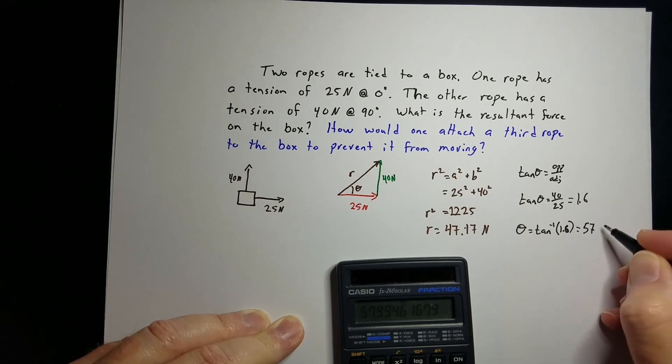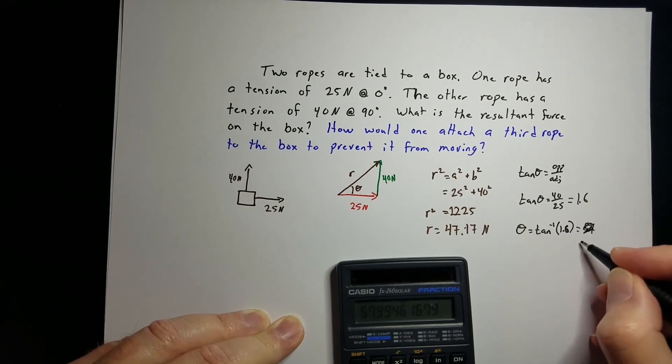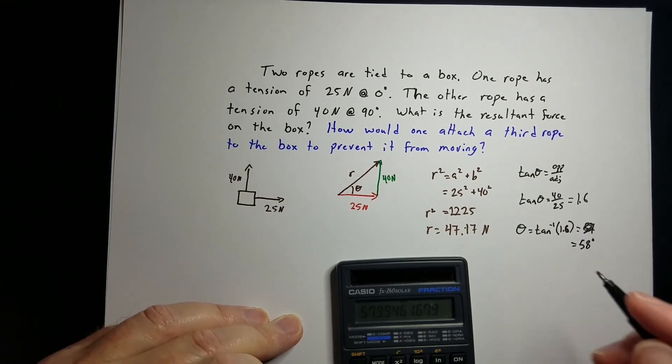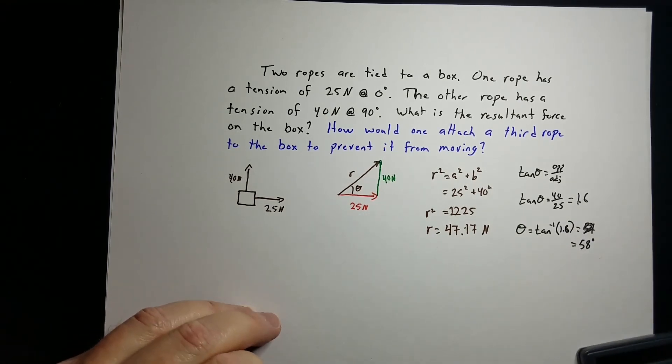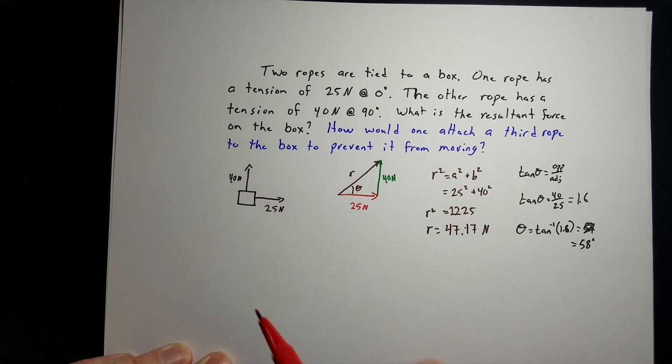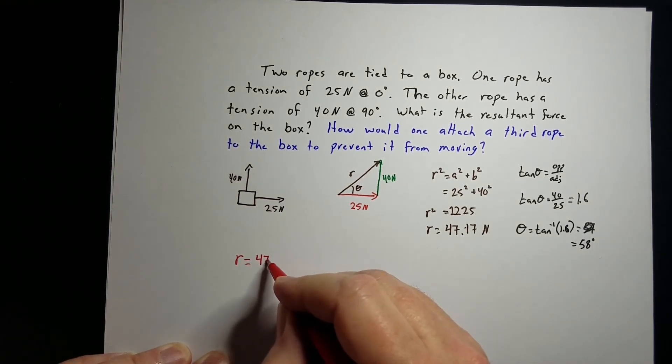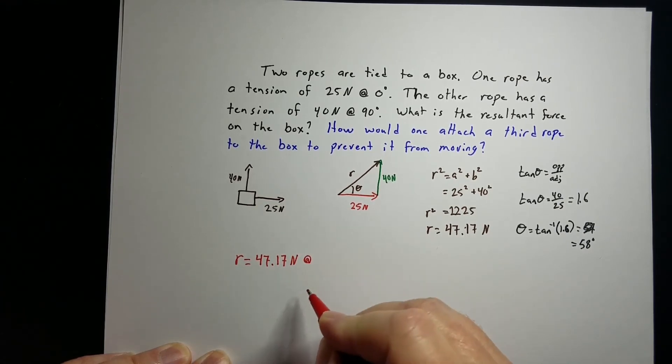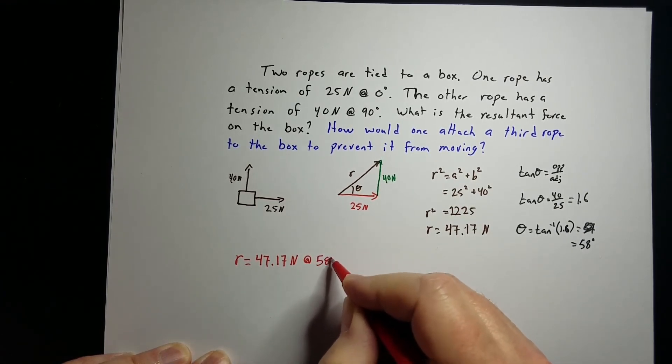Let's just call it 58 degrees. That'll make things easier for us. This vector, that resultant, is 47.17 newtons at 58 degrees.